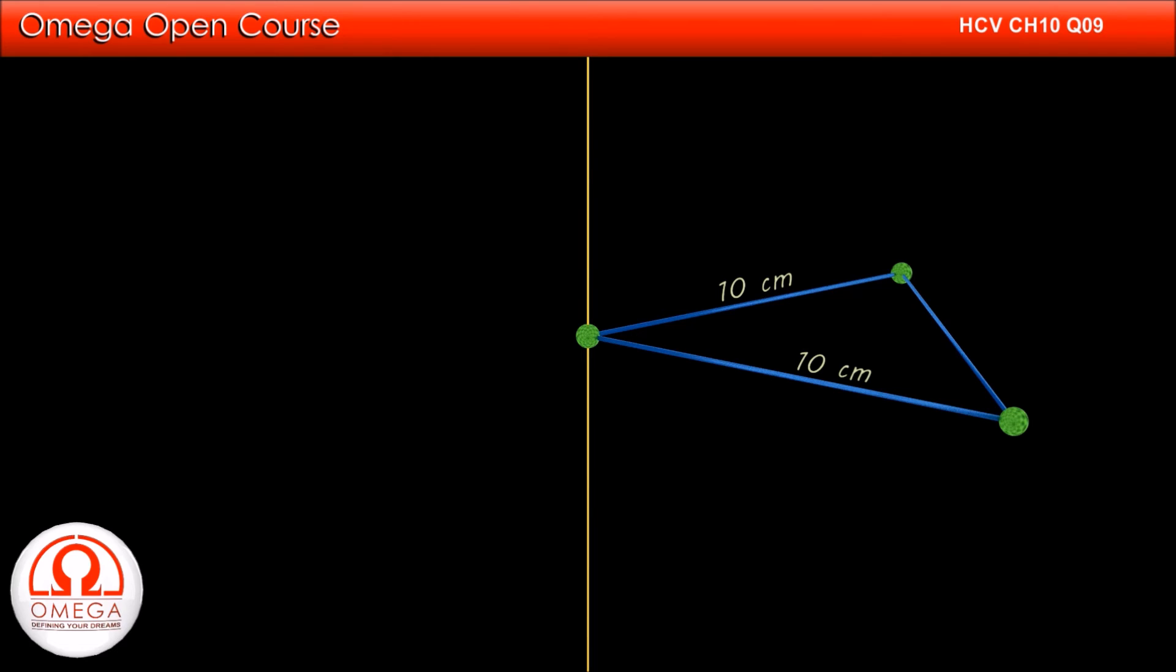So the moment of inertia of the system is 2 into mr square, or 2 into 0.2 into 0.01 kg meter square. Simplifying, we get 4 into 10 to the power minus 3 kg meter square. This is the answer to the second part of the question.